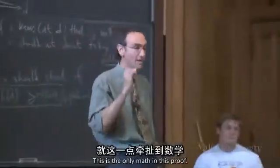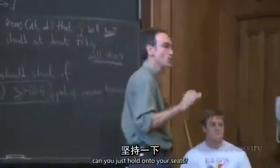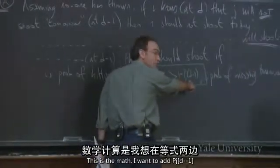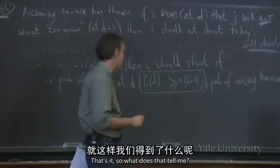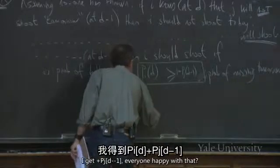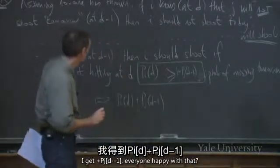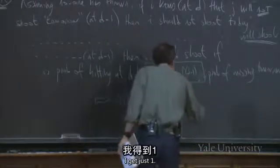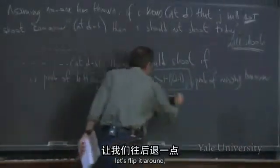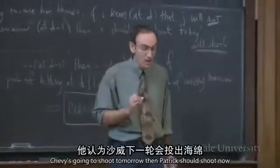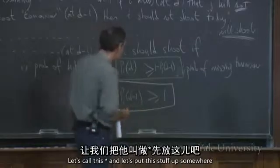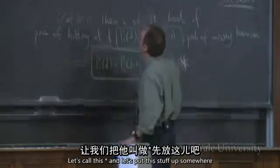Now I want to do one piece of math — this is the only math in this proof. Everyone who's math-phobic, just hold on to your seats, don't panic, a little bit of math coming. I want to add P_j(D minus 1) to both sides of this inequality. If I add P_j(D minus 1) to both sides, I get P_i(D) plus P_j(D minus 1) on one side and 1 on the other. So our rule is: if Patrick hasn't thrown yet and thinks Shebby's going to shoot tomorrow, then Patrick should shoot now if his probability of hitting now plus Shebby's probability of hitting tomorrow is bigger than 1. Let's call this the star inequality.